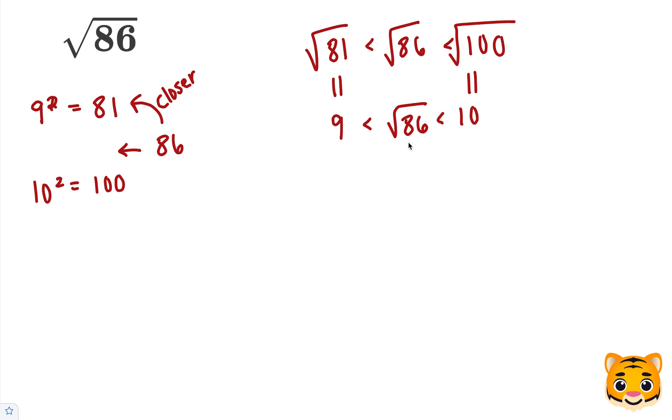Now we can see that the square root of 86 lies between 9 and 10. However, because 86 is closer to 81, that means the square root of 86 will be closer to 9. So we can try out values closer to 9 and multiply them by themselves to see how close we can get to 86.